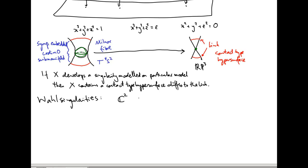Wahl singularities have the following form. You take ℂ², quotient it by the action of the group ℤ/p²ℤ. If μ is a p²-th root of unity, it acts on complex coordinates (x, y) as μ·(x, y) = (μx, μ^(pq−1) y). So this is a particular kind of cyclic quotient singularity.